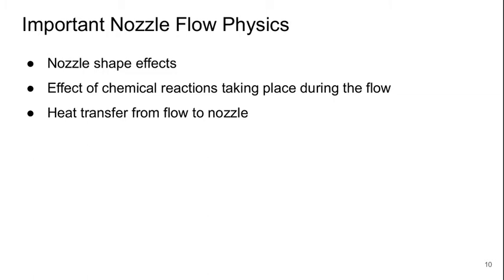So once we know the gas properties, then we need to think about the physics of flow in the rocket nozzle. There's basically effects due to the shape. There's the fact that it's not a clean division between the chemical reactions taking place in the combustion chamber and then unreacting flow downstream. But in fact, chemical reactions take place during the flow through the nozzle. And in reality, there is heat transfer from the flow to the nozzle.